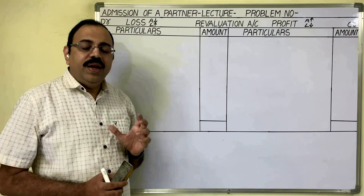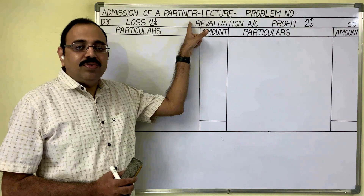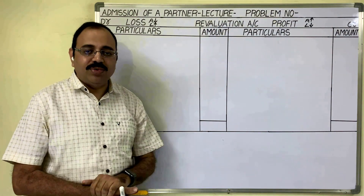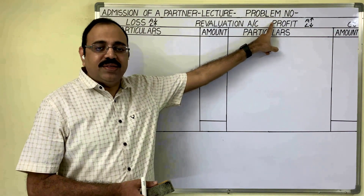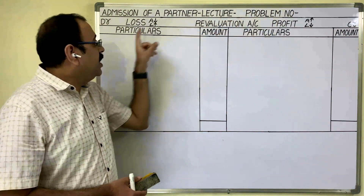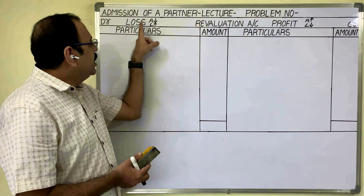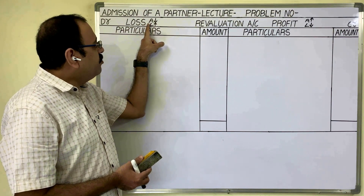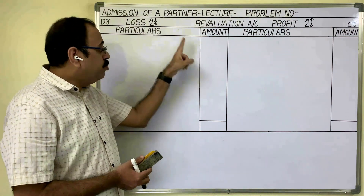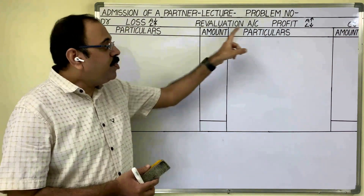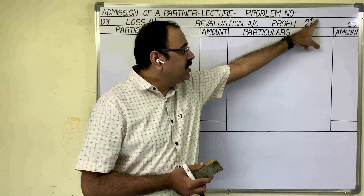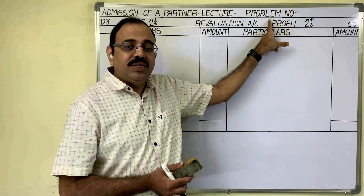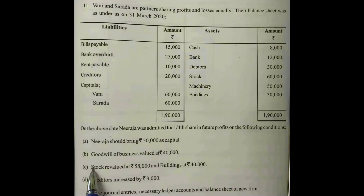In ledger the first account is revaluation account. Revaluation account is a nominal account. The nominal account rule: debit all expenses and losses, credit all incomes and gains. In revaluation of assets and liabilities, if asset value decreases or liability value increases it is a loss — debit to revaluation account. If asset value increases or liability value decreases it is a profit — credit to revaluation account.